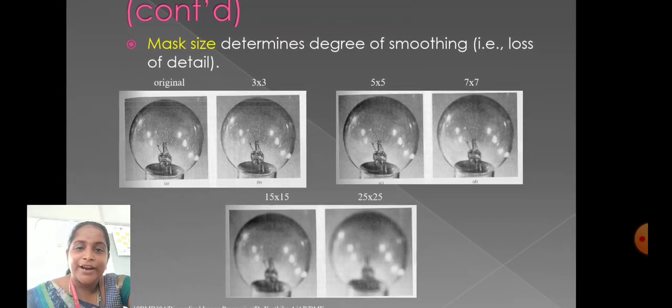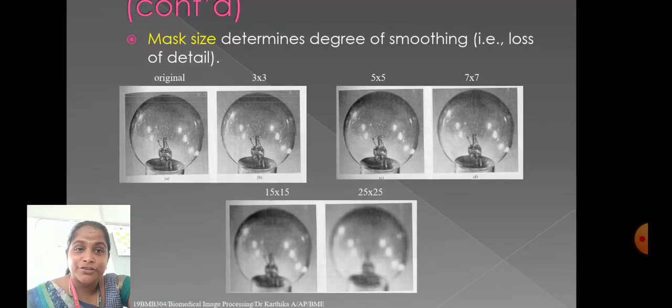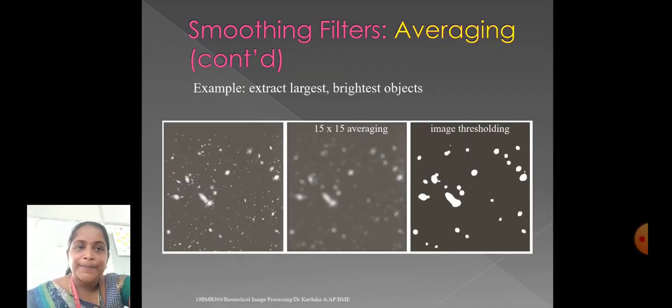Original, we have 3x3, 5x5, 7x7, 15x15, and 25x25 mask. Here, the detail is lost. For example, extract largest, brightest objects. Here, we use between-cross-between averaging. It results in image thresholding. It extracts the largest and brightest objects.